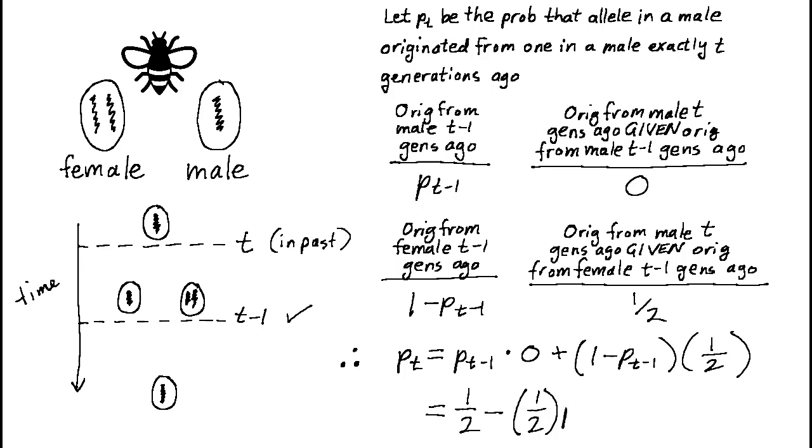Tidying this up, we get this expression, to which we can attach the observation that p sub 0 must equal 1, since we're 100% sure the allele is currently in a male.